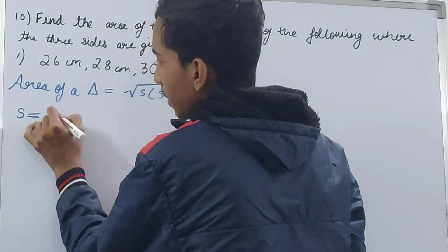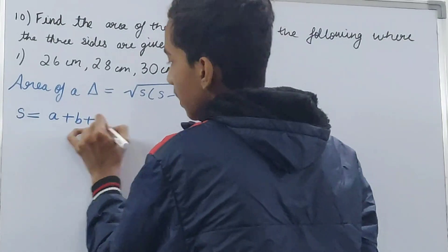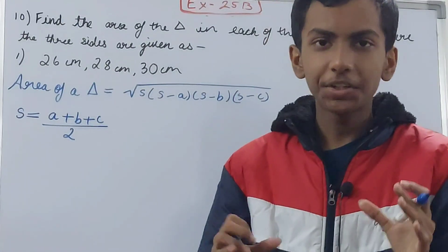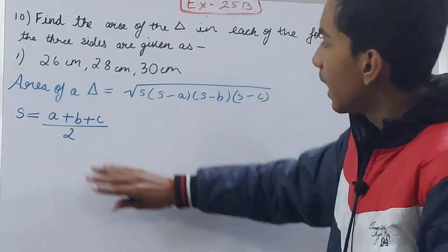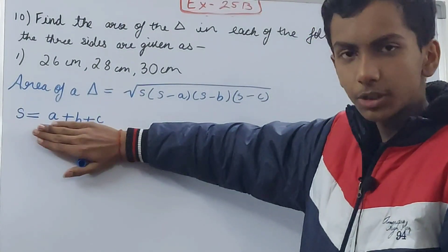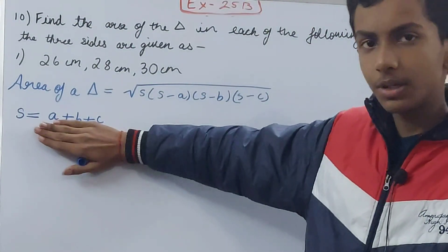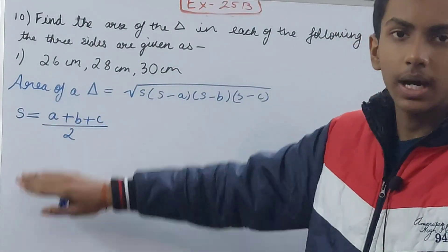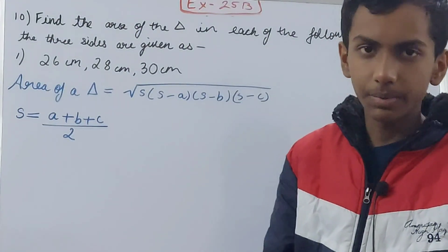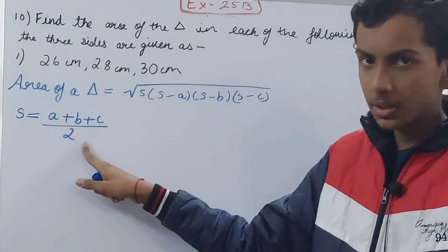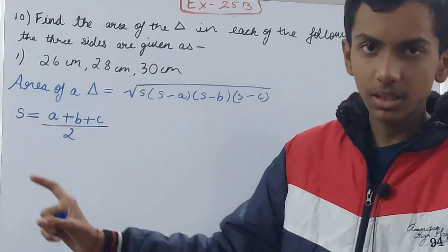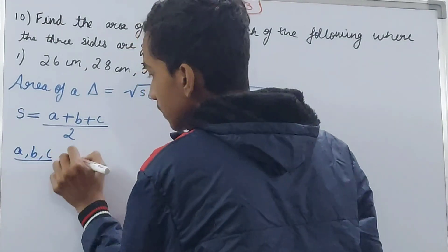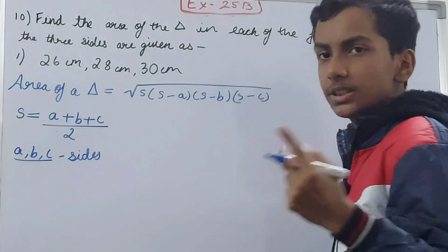Now what is s? s is equal to the semi-perimeter, that is (a + b + c) / 2. Semi-perimeter is half of the perimeter. If I remove the 2, I am left with a + b + c, which is the sum of all three sides — the perimeter. When I divide by 2, I get the semi-perimeter. That is the value of s. And a, b, c are the three sides of the triangle.